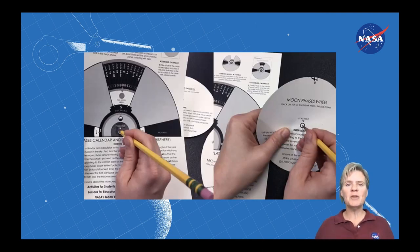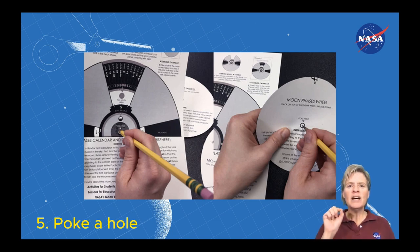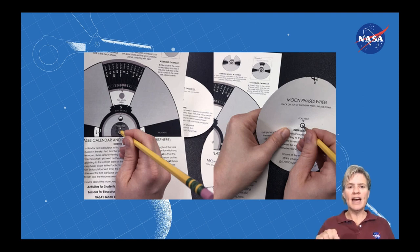Next, use that sharpened pencil again to poke a little tiny hole in the center of all three wheels. This is going to be the guide hole either for your brass fastener or for your needle and thread.